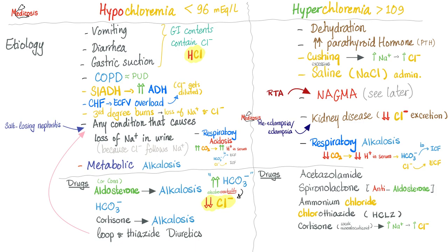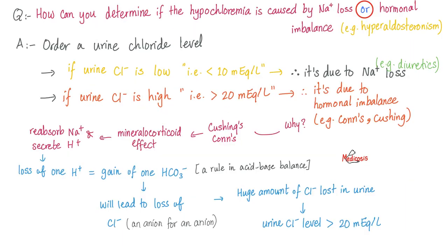If you've watched my previous video on serum chloride, we talked about all the causes of hypochloremia and hyperchloremia in the blood with detailed explanation. Medicosis, my patient is having hypochloremia, low chloride level in the blood. Is this due to sodium loss, because chloride follows sodium, or is this something hormonal, like hyperaldosteronism? Well, to know the difference, order urine chloride level.